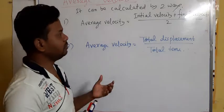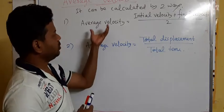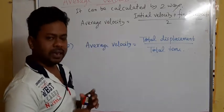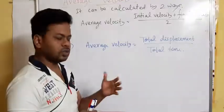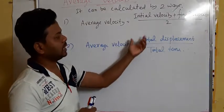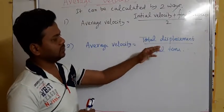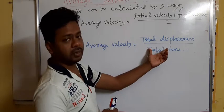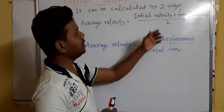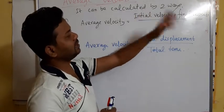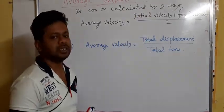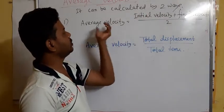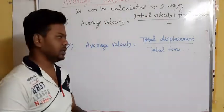When you have a numerical to solve and need to find out the velocity, according to the data given in the question, we can use either of these. If displacement is given, then you will use the displacement formula. And if initial velocity and final velocity are given in the question, then we can use the first formula to find out average velocity.